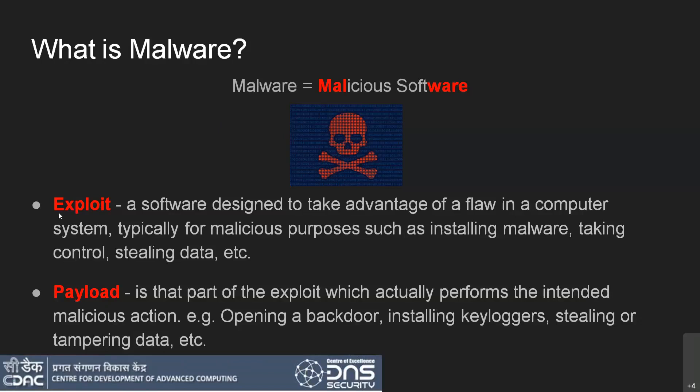Malware basically has two components: one is the exploit, and the other is the payload. The payload is the part that carries the malware to its destination and implants something there. The exploit is executing the operation — taking advantage of a resource and executing itself to cause some loss to the system. So there are two parts: how does the malware reach the destination, and how does it execute itself.